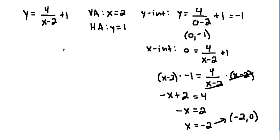Now we have enough information to begin making our graph. So here's my axes. We have a vertical asymptote at x equals 2, and we also have a horizontal asymptote at y equals 1. We also have some points. We have one at 0, negative 1. That's our y-intercept. And we have one at negative 2, 0. That's our x-intercept.